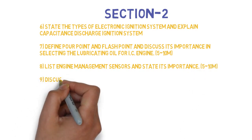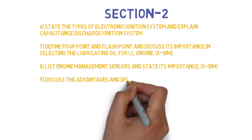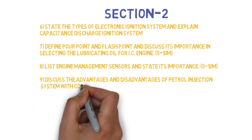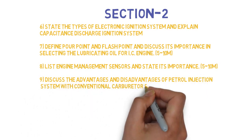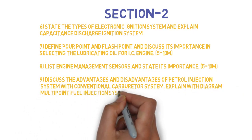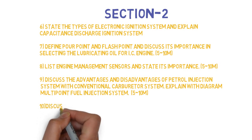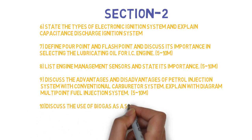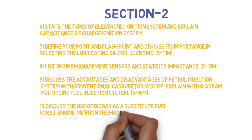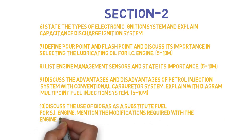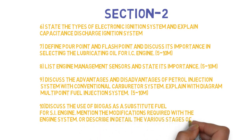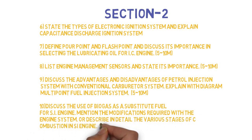Next question is: Discuss the advantages and disadvantages of petrol injection system with conventional carburetor system. Explain the different multi-point fuel injection systems. This can come for 5-10 marks. Next question is: Discuss the use of biogas as a substitute fuel for SI engine and also mention the modifications required with the engine system, or describe in detail the various stages of combustion in SI engines. This can come for 5-10 marks. These are the 5 questions you have to do in Section 2.